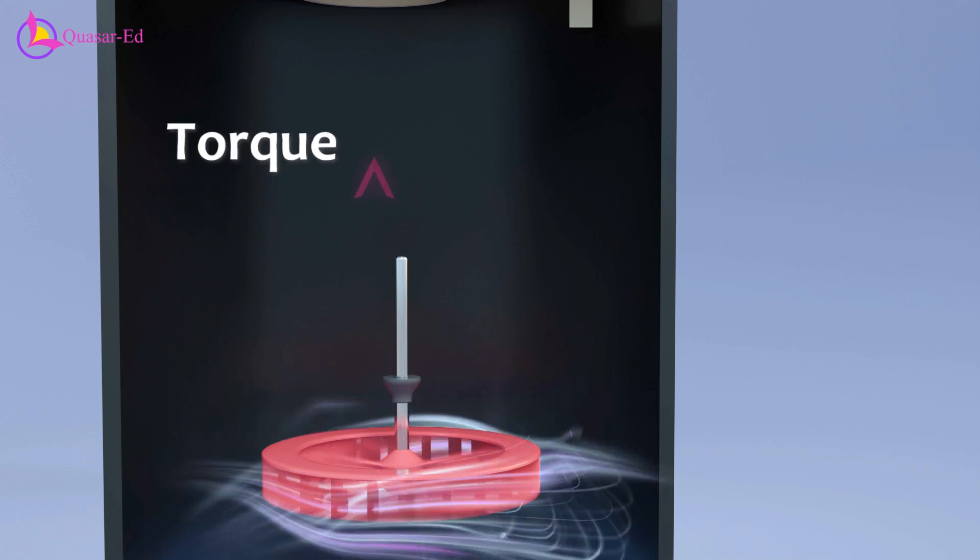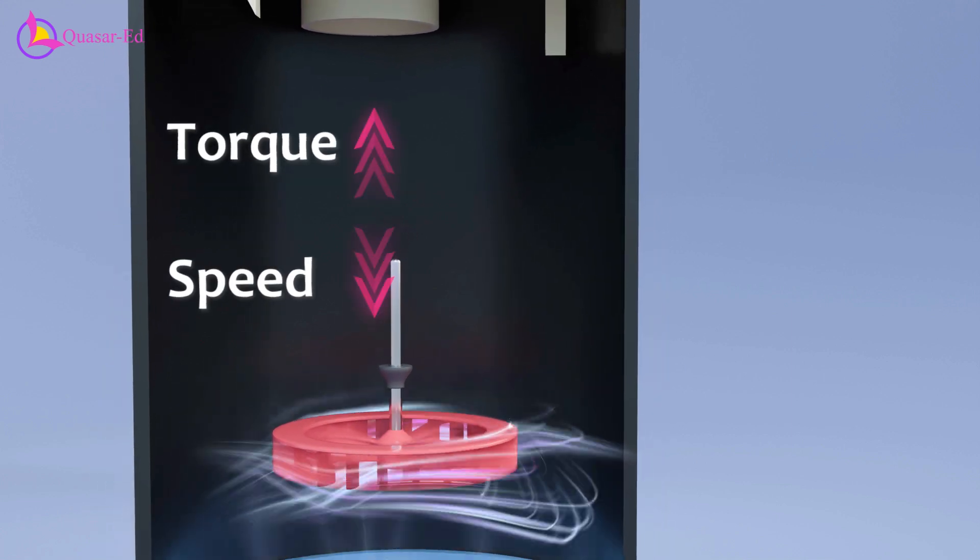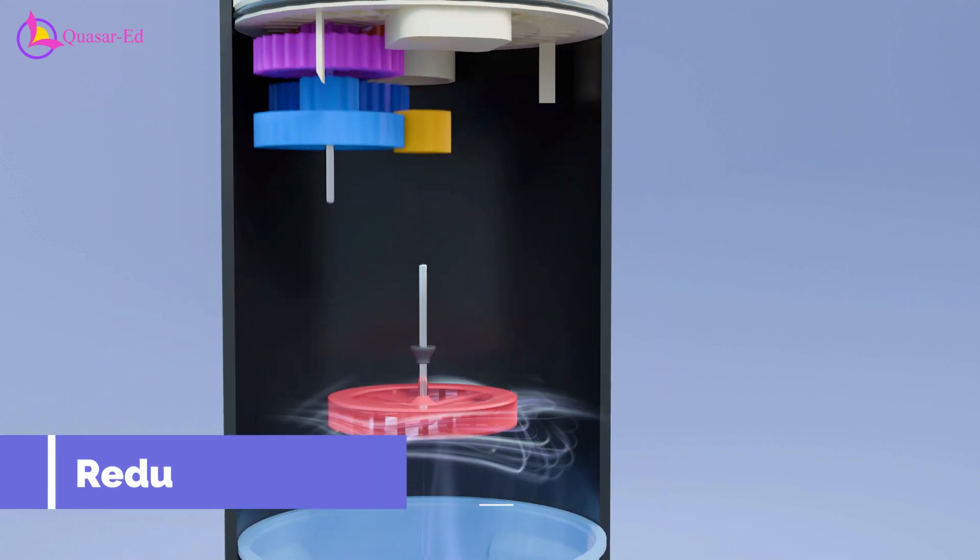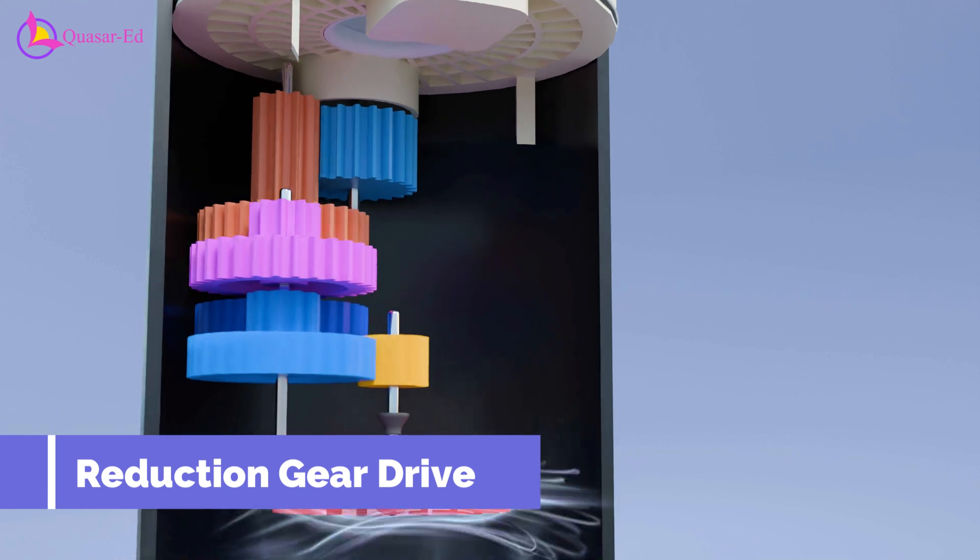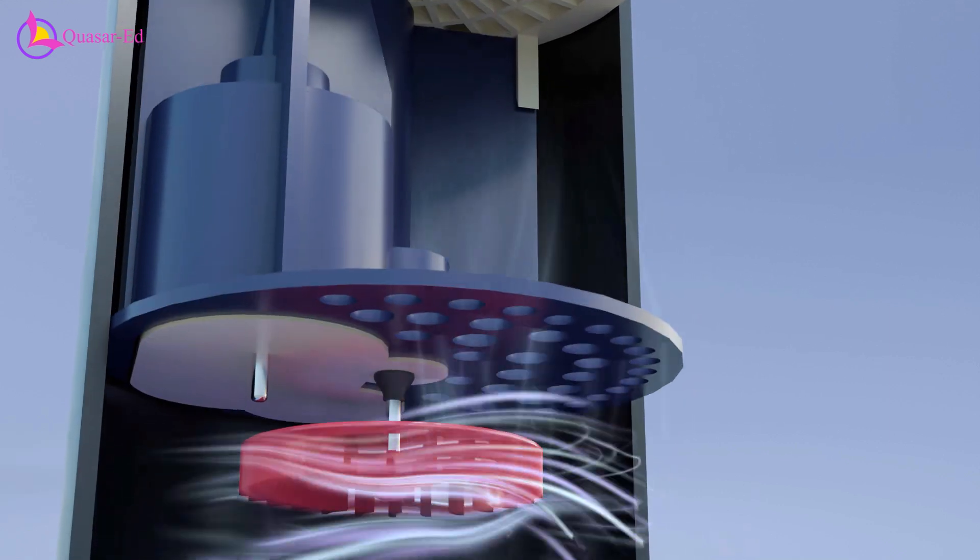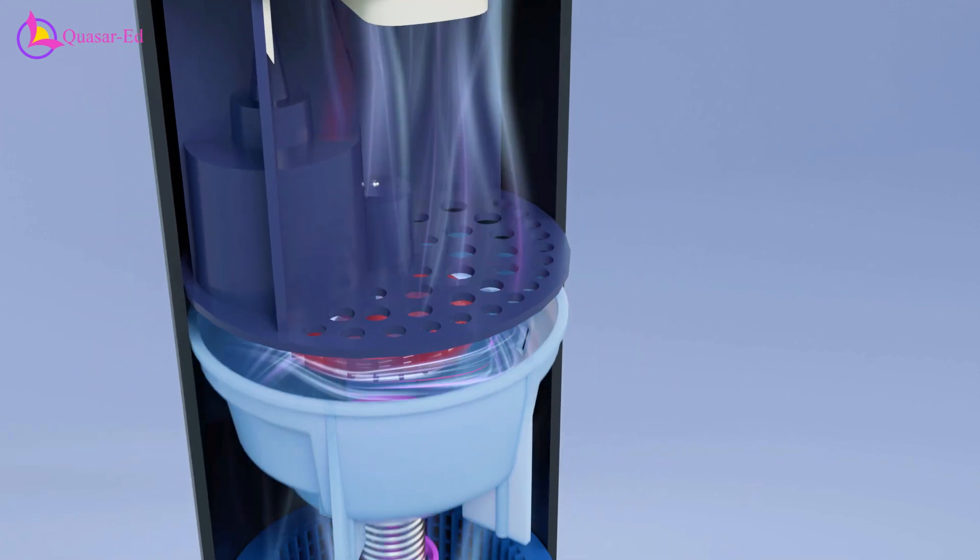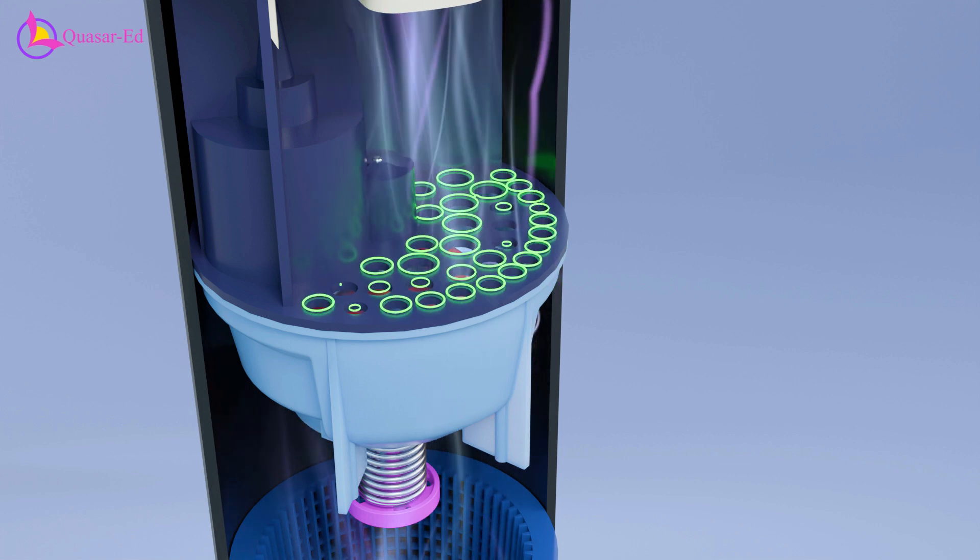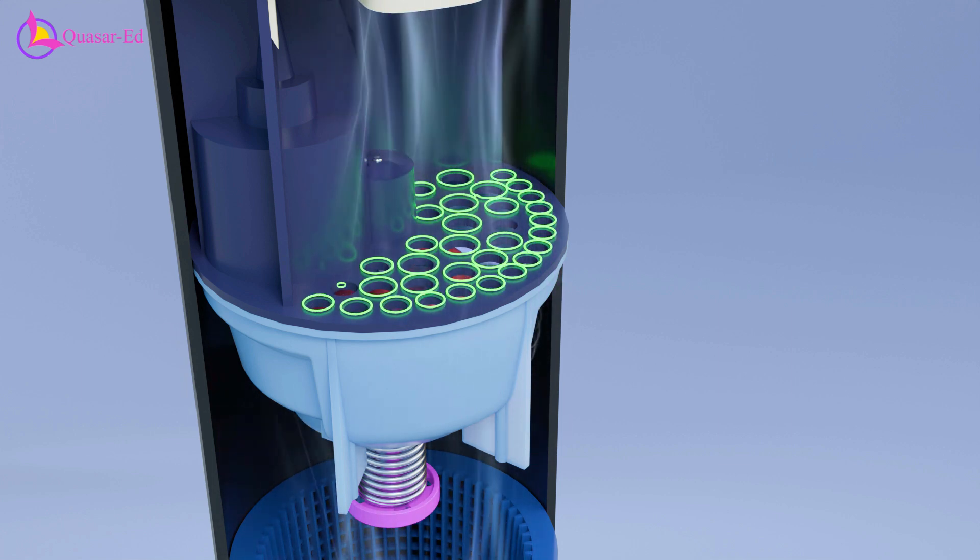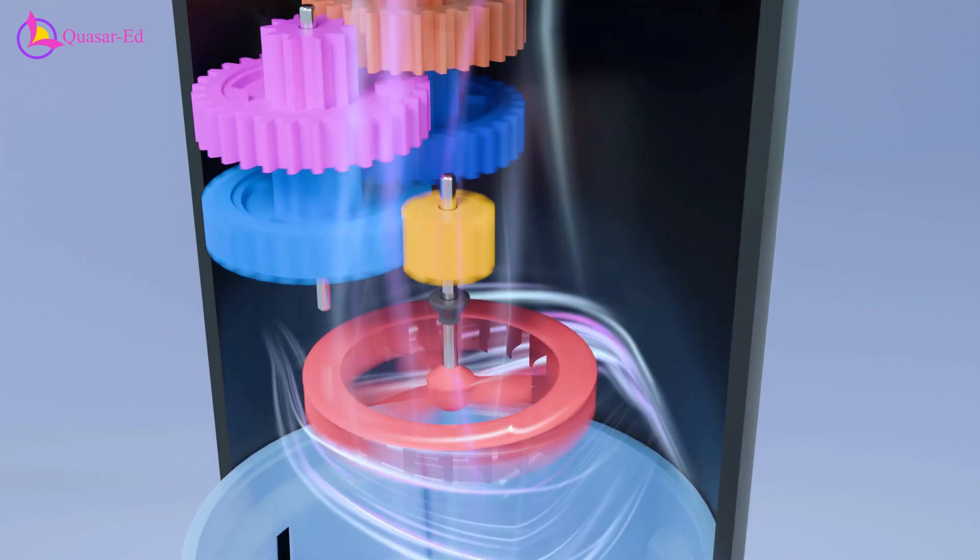To increase torque and reduce speed, the turbine connects to a reduction gear drive enclosed within a waterproof case. Water exits the turbine chamber through bottom holes in the gear drive case.